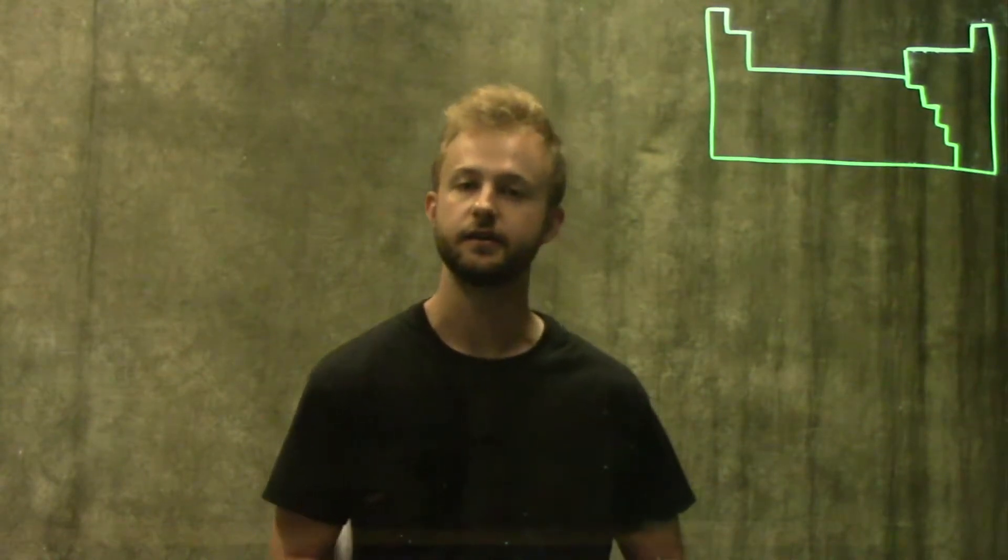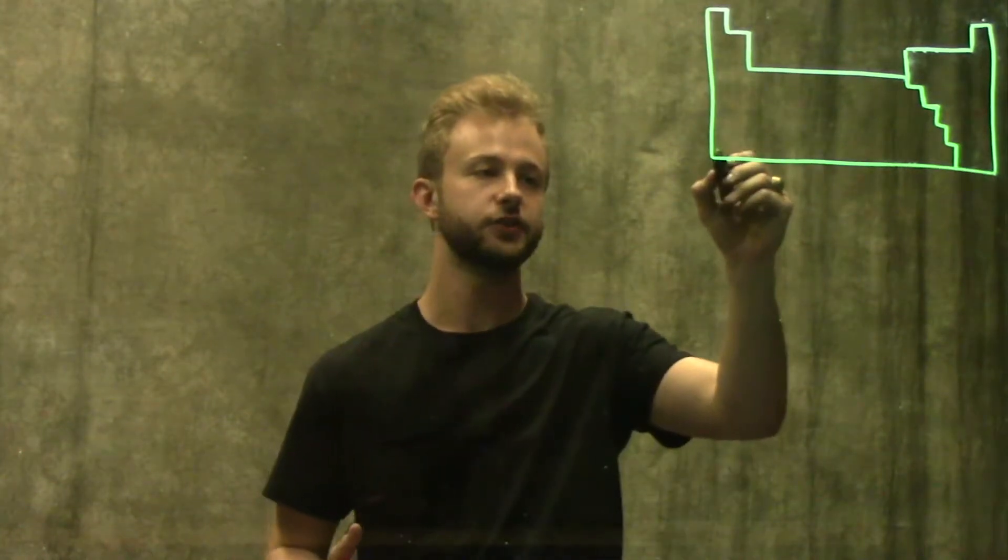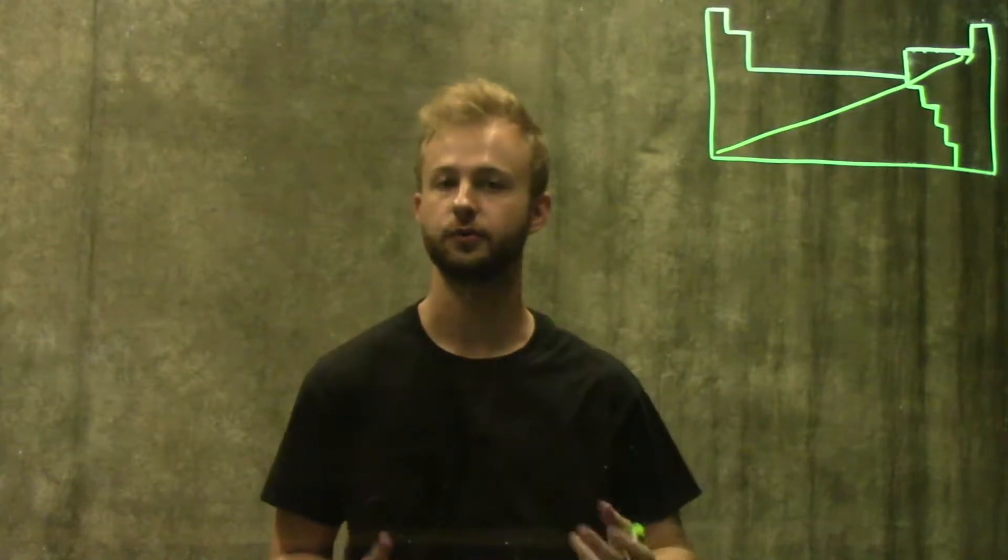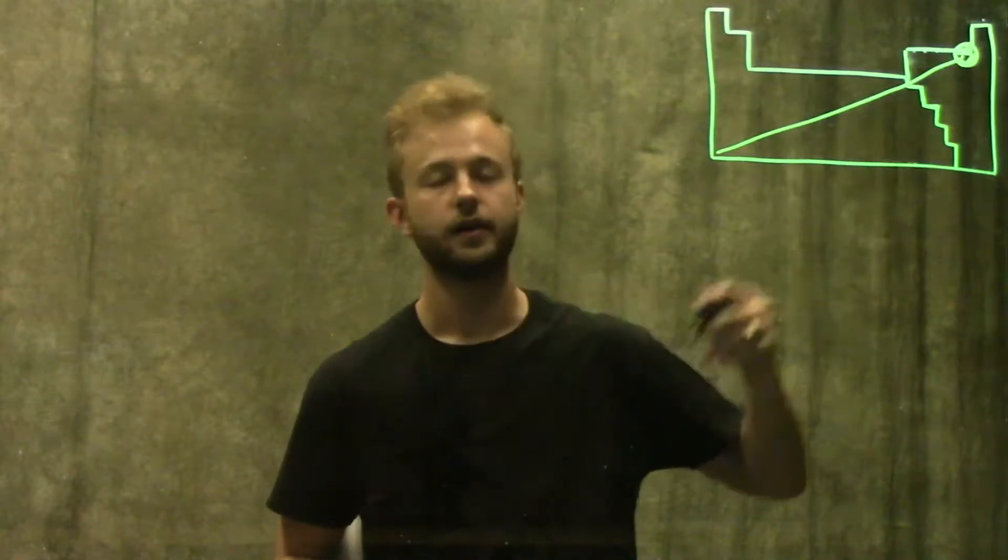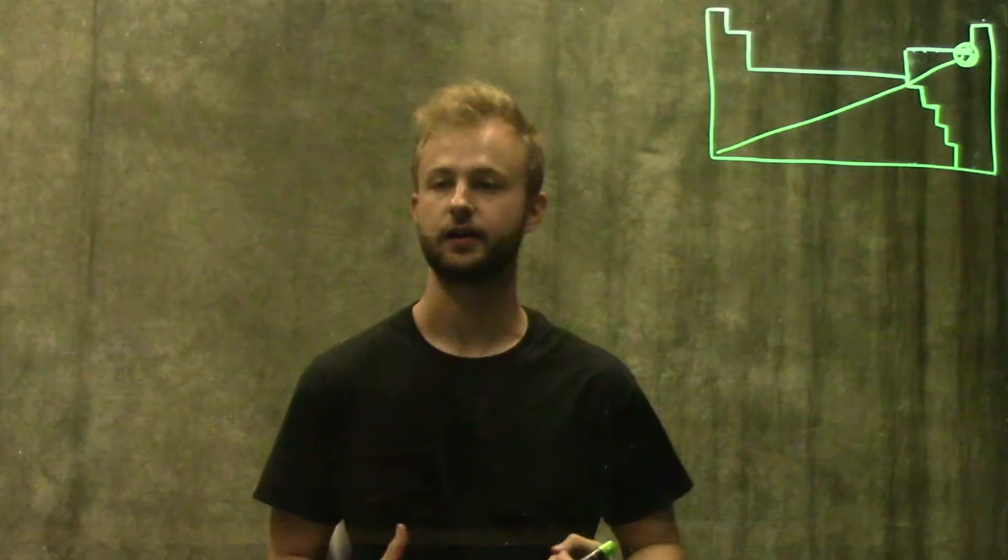Electronegativity is the tendency of an atom to draw electrons towards itself in a chemical bond. Electronegativity is going to increase going up and to the right on the periodic table, which means that fluorine, which is right here, is going to be the most electronegative atom. It's going to pull electrons very strongly towards itself in a chemical bond.